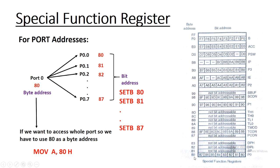For port addresses, let's take an example. P0 has SFR address 80H, which is the byte address for port 0. In 8051 instructions, there are two types of instructions: byte instructions and bit instructions. P0 is also a bit address, so the address for each and every bit location is given. The byte address for port 0 is 80H, and by default the SFR address for P0, P1, P2, and P3 is 80H, 90H, A0H, and B0H respectively. Using byte instructions, the whole port can be accessed and data present on the port can be copied into the accumulator.